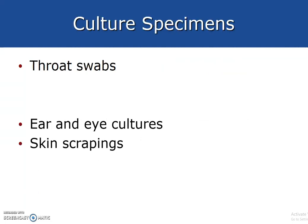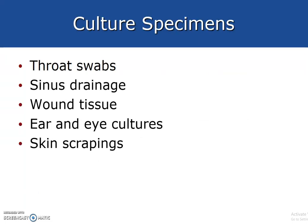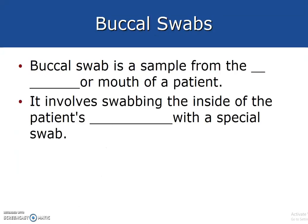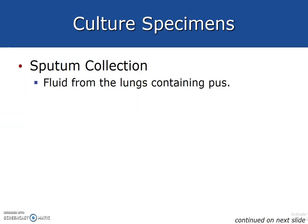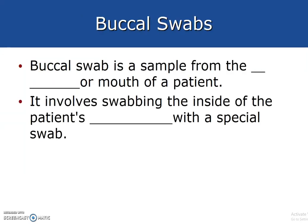Culture swabs include throat swabs for strep and flu, sinus drainage, wound tissue, ear and eye cultures, and skin scrapings. A buccal swab is a sample from the cheek or mouth of a patient, taken by swabbing the inside of the patient's cheek with a special swab. When collecting buccal swabs, avoid contaminating the specimen by getting anything from the tongue or the back of the throat.